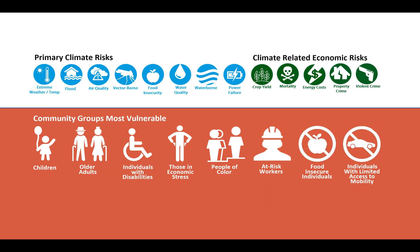Primarily the vulnerable groups are folks like youth or seniors, individuals with disabilities — folks that might have some need for support in certain areas — people under economic stress. It doesn't mean they're less capable, but if you have less money available to solve issues or take care of emergencies, you are more vulnerable. People of color, at-risk workers — think first responders, construction workers, folks that are out in the elements to do their jobs and the elements are changing. And folks that might be vulnerable to food insecurity or individuals with limited mobility.